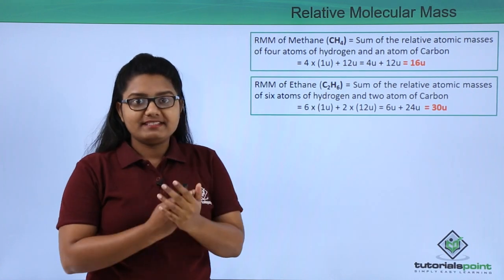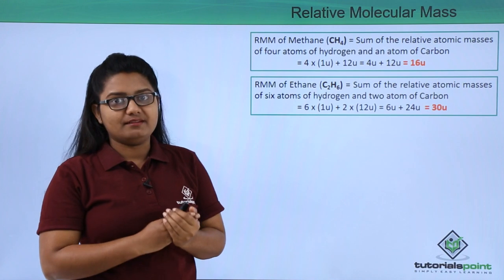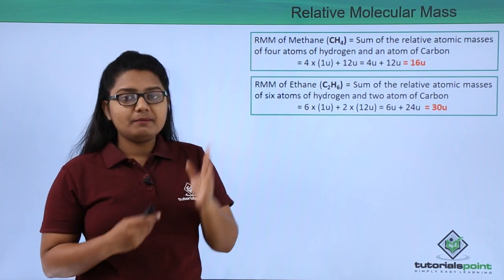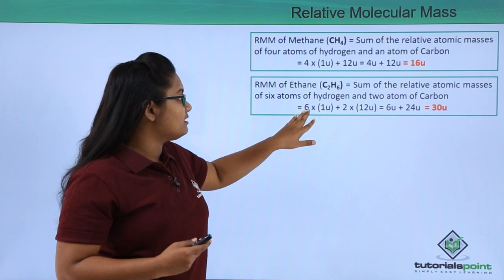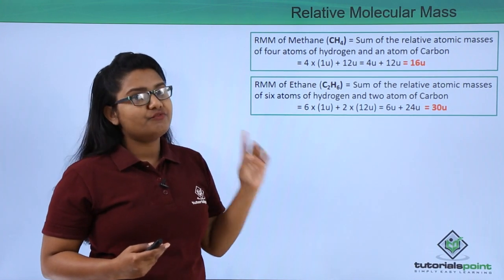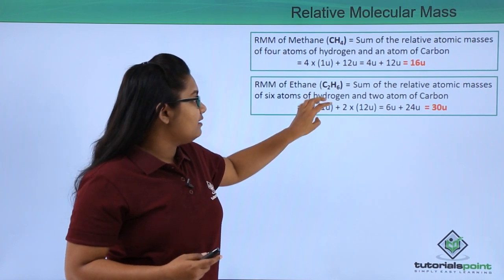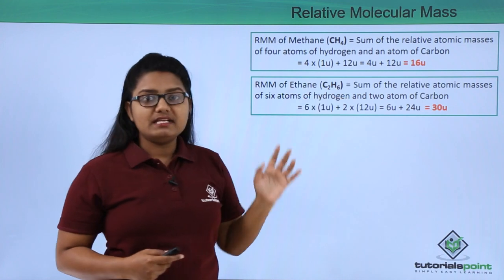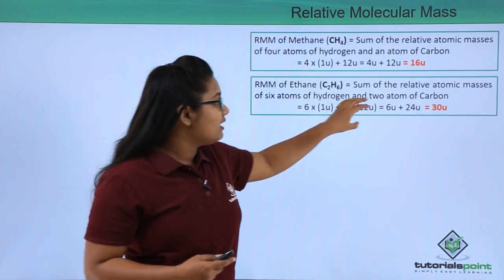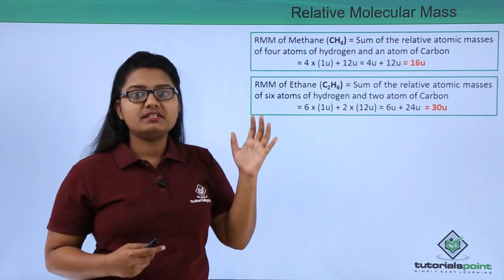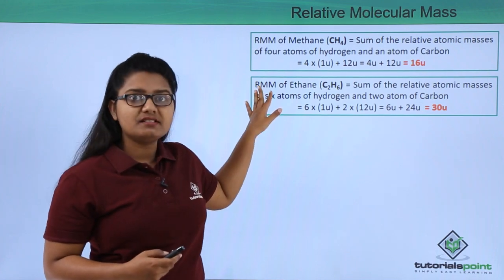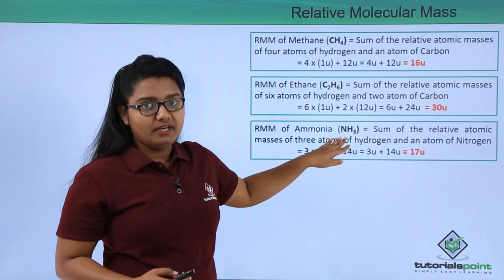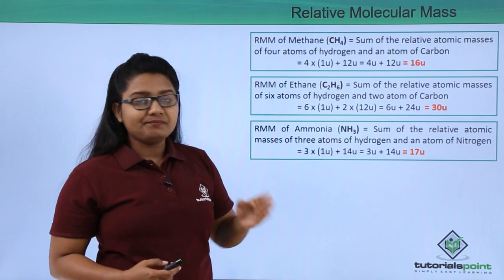Ethane has the formula C₂H₆, meaning it has two carbon atoms and six hydrogen atoms. To find its relative molecular mass, we sum 6 × 1u for the six hydrogen atoms and 2 × 12u for the two carbon atoms. This gives 6u + 24u = 30u. Therefore, the relative molecular mass of an ethane molecule is 30u.